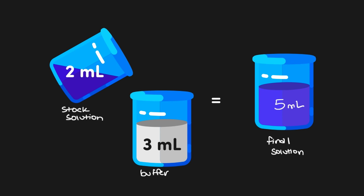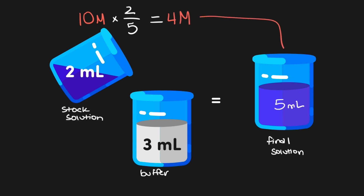So this would be a 2 to 5 dilution, because the final solution will have 2 parts of the original concentrated solution for every 5 parts of the total volume. The 2 to 5 ratio here is known as the dilution factor, and can be used to determine the ending concentration of the new diluted solution. If we started with a 10 molar stock solution and diluted it as shown, the final solution would be 2-fifths the strength, using the dilution factor to determine concentration.